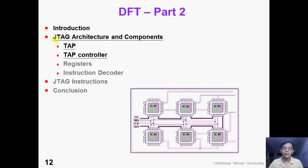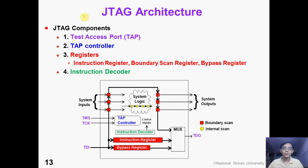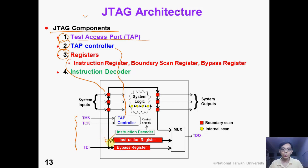In the second half of this video, we will introduce JTAG architecture and two components: TAP and TAP controller. The other two components will be introduced in the next video. This slide shows a simple JTAG architecture. JTAG has four important components. Number one is the test access port, or TAP. Number two is the TAP controller. Number three, JTAG registers include instruction registers, boundary scan registers, and bypass registers. And the fourth component is the instruction decoder, shown in green.